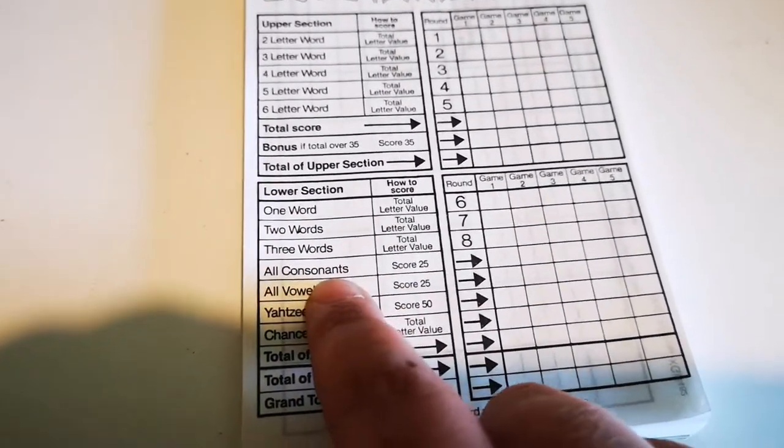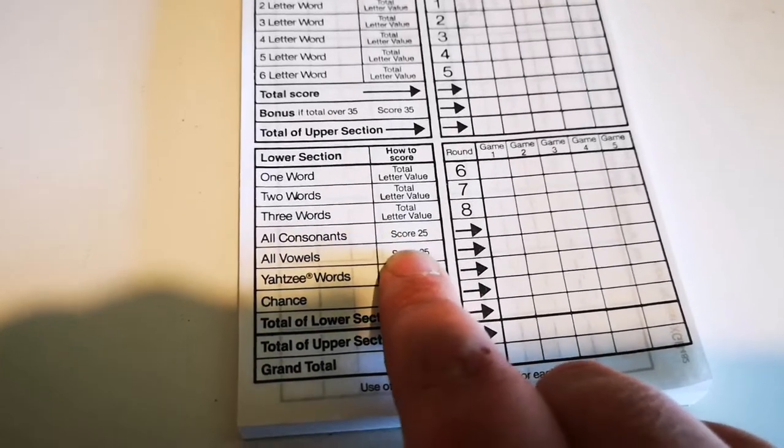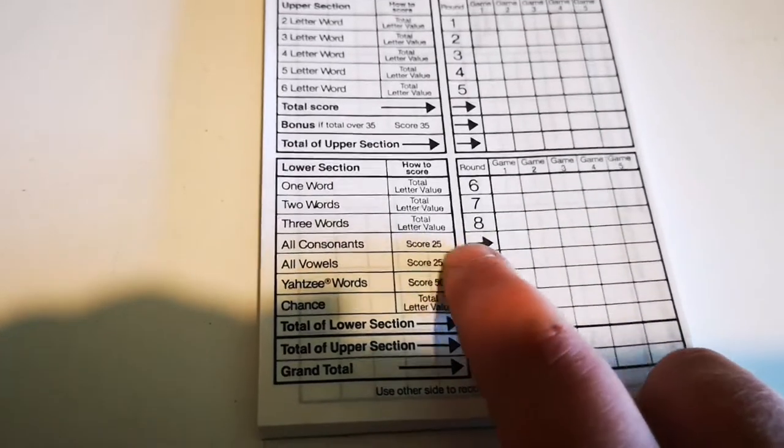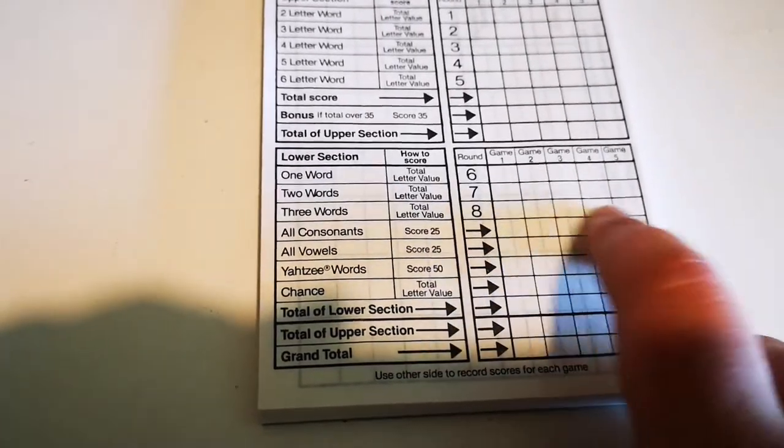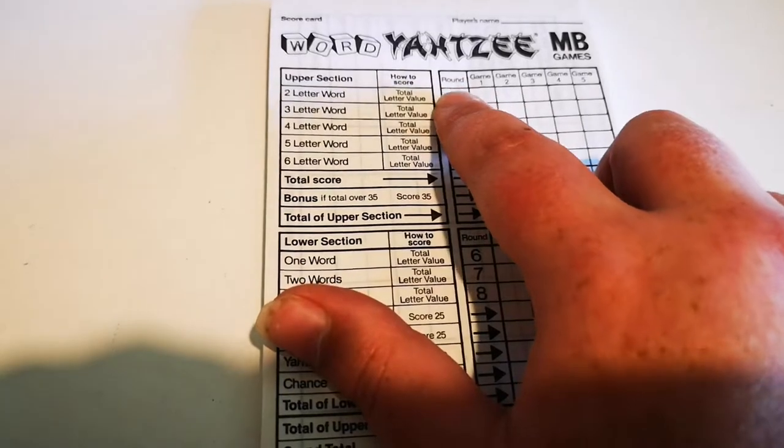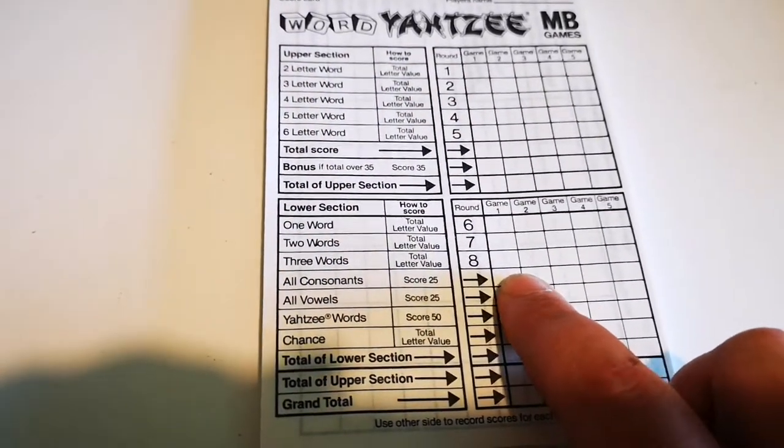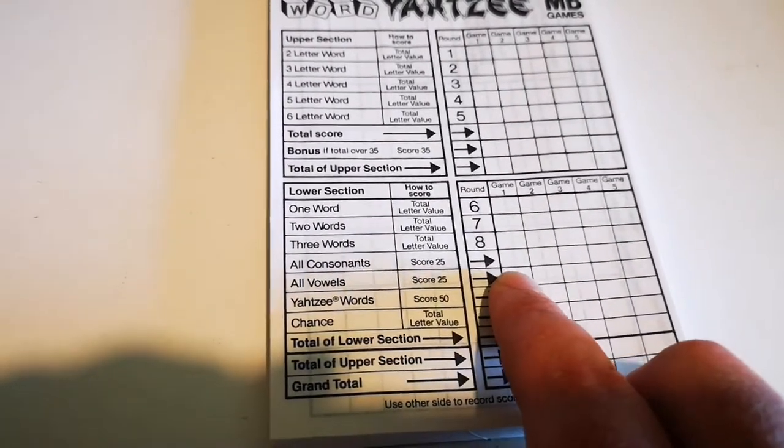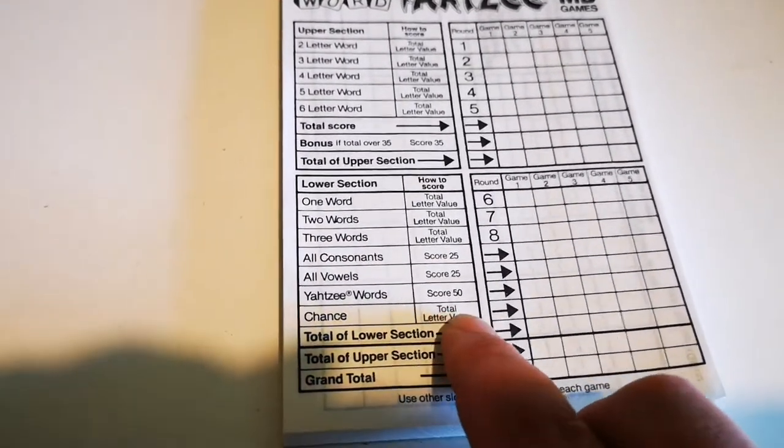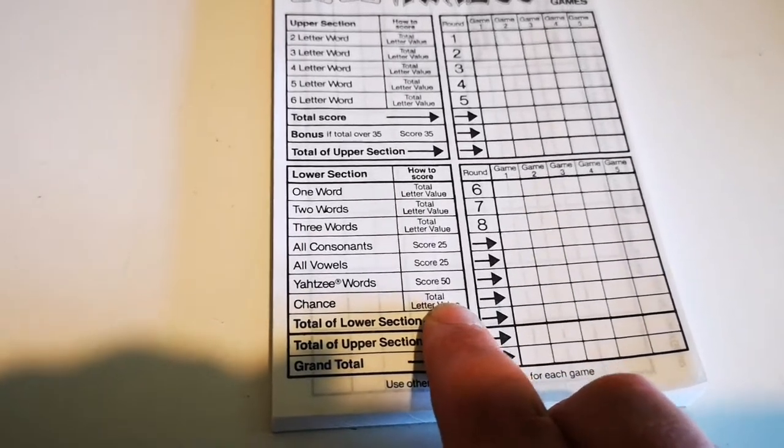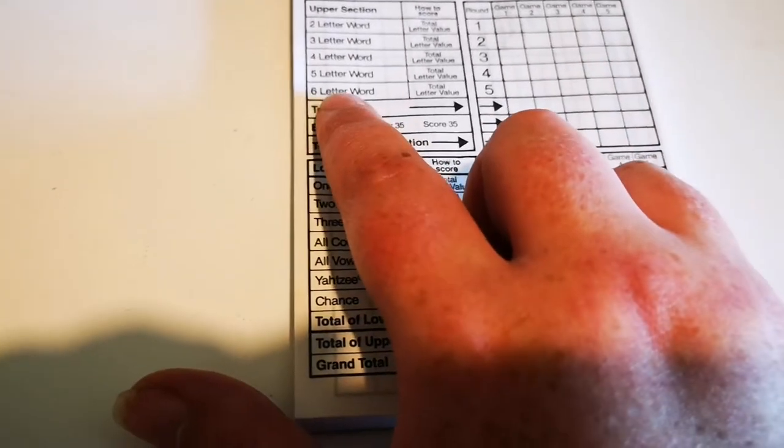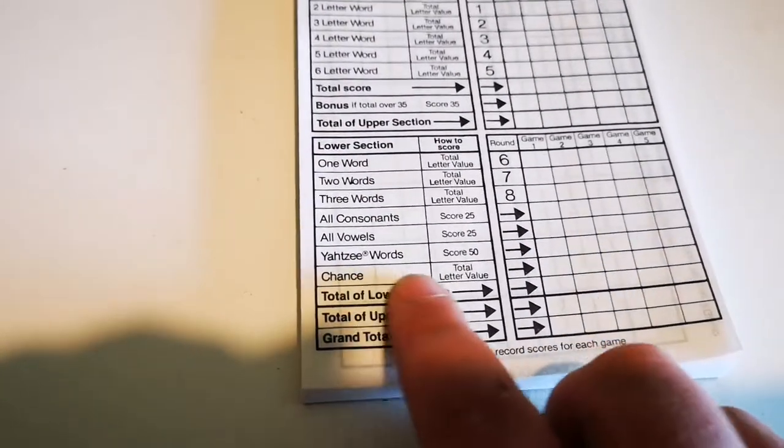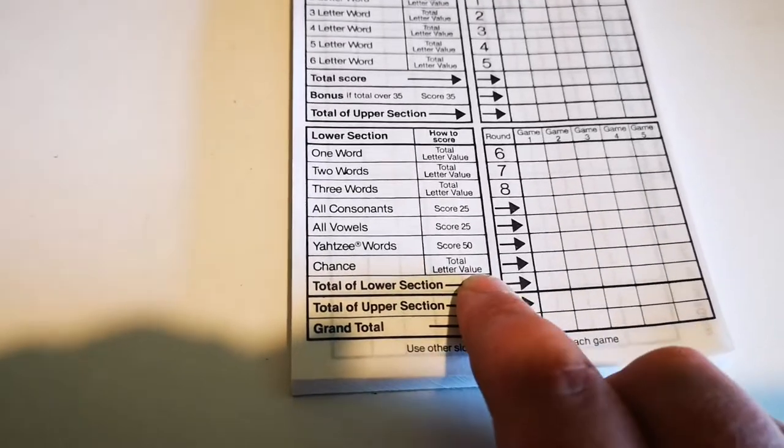But then when you come to all consonants, this is after, basically this rule, if you roll all consonants after your second roll, you score 25 points. This would come here, wherever you are along here. And then again, you would get a zero in your round. But it's still a huge points bonus. If you get all vowels, after your first throw, you gain another 25. And chance is like a wild card. It's basically, if you've got a good one, but you don't know where to fill it, or you've already, say it's a six letter word, and you've already filled in six letter word and one word, you could then use chance as like a wild card, and you can do the total letter value for that as well.